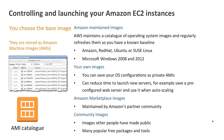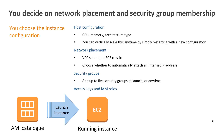So you choose your base image, then choose the CPU, the memory, and the architecture that you want. It's important to remember that at any point you decide you need to scale your CPU and memory either up or down, all you need to do is stop your instance, change the instance type, and restart it.